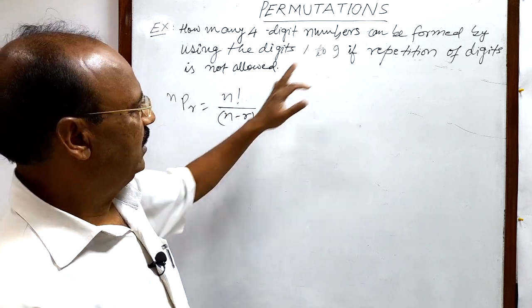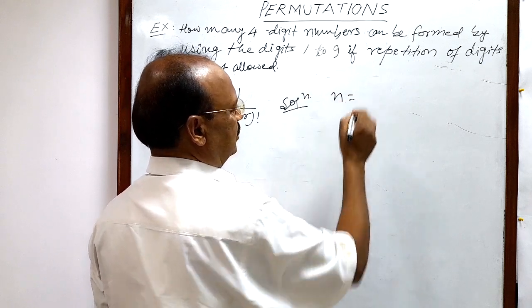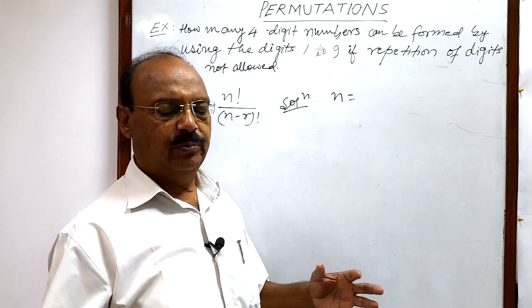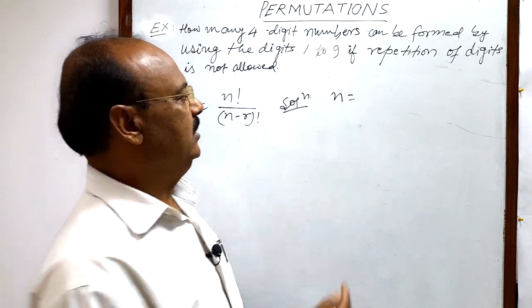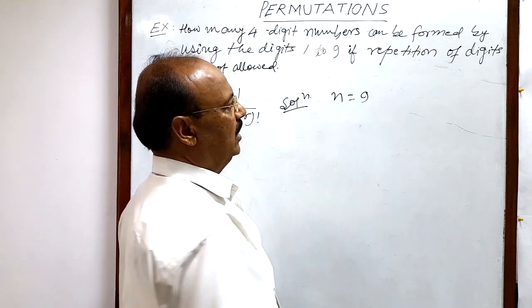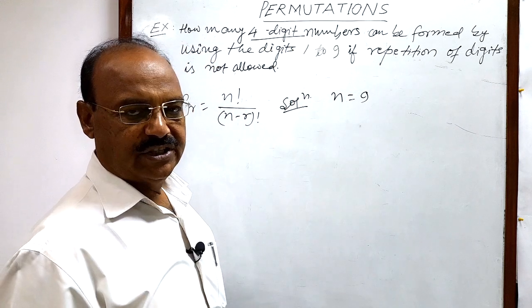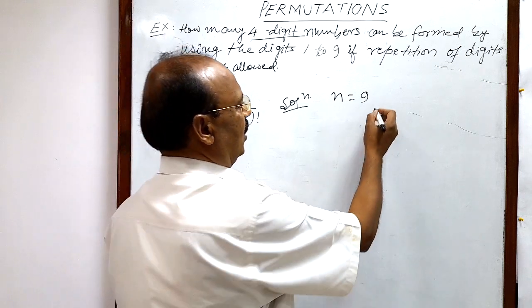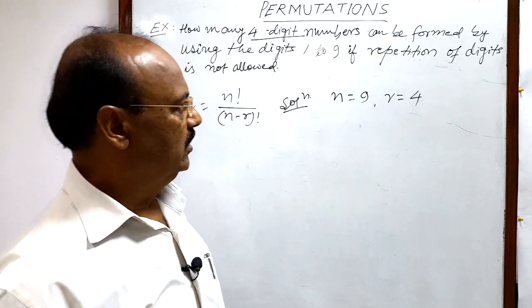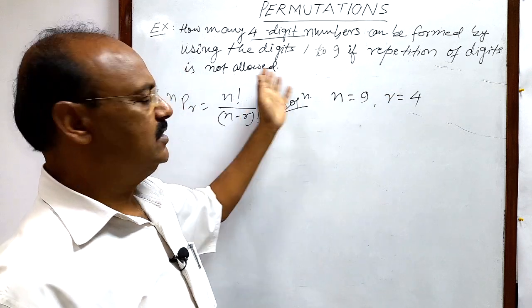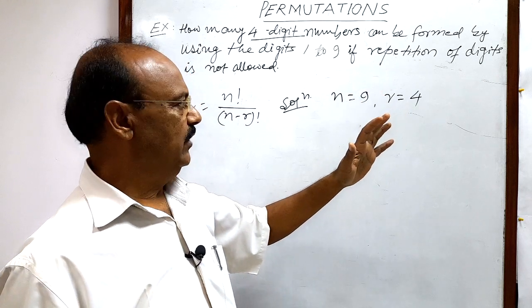So here in this case, let us see the solution. Now in this case, n is equal to how much? The total number of objects from which we have to select, digits 1 to 9—so n equals 9. We need to form four-digit numbers, so r equals 4. Repetition of the digits is not allowed, so each digit can be used only one time.